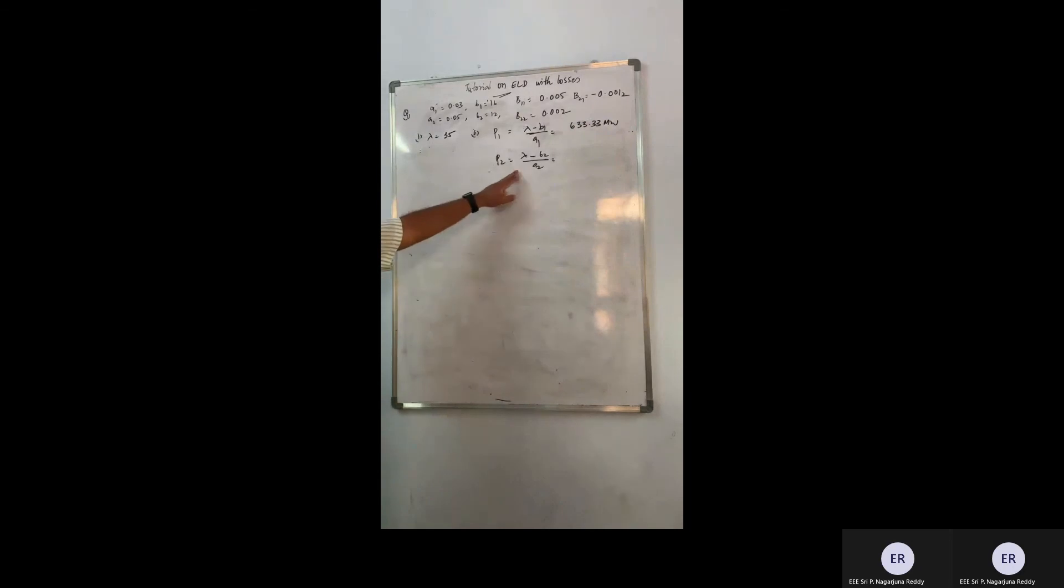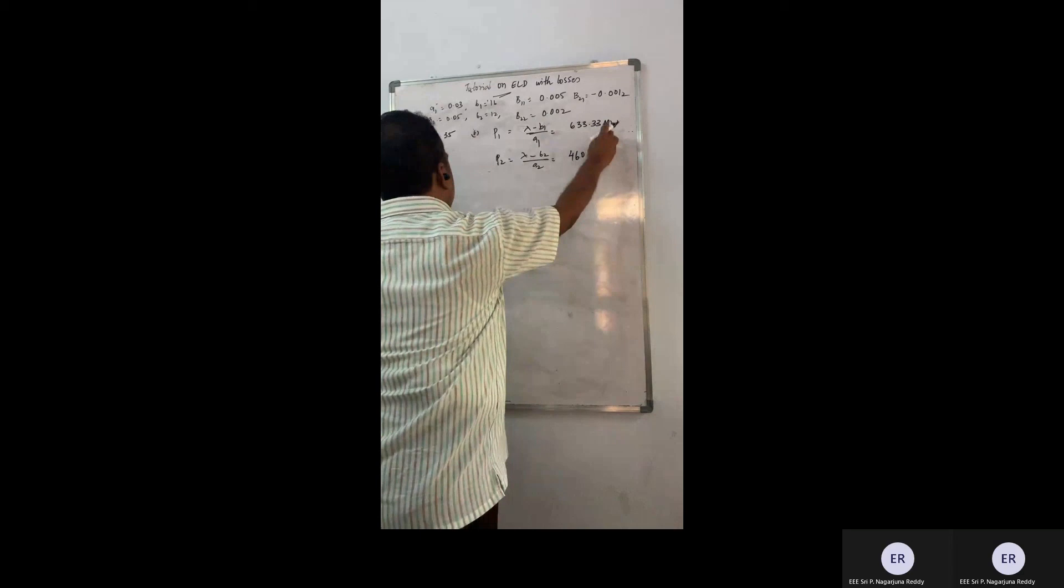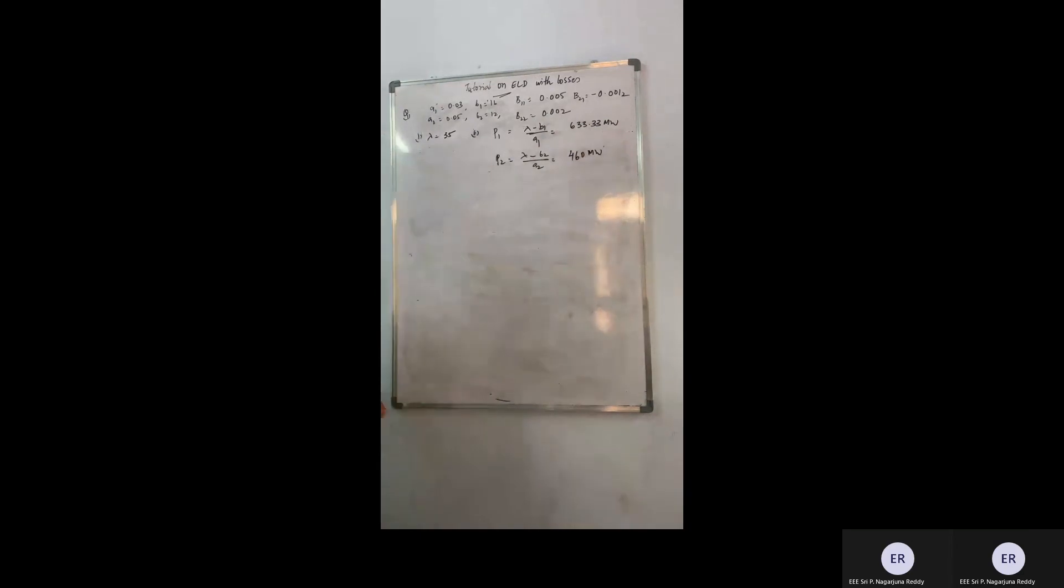Now P2 is 35 minus 12 by 0.05. So it is 35 minus 12 by 0.05. And its value is 460. So these are my initial values of P1 and P2 now.